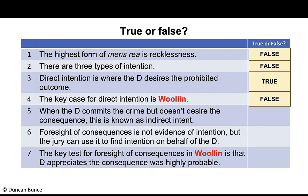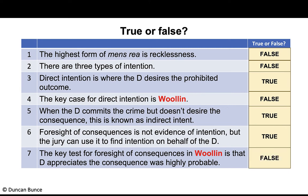When the defendant commits the crime but doesn't desire the consequence, this is known as indirect or oblique intent — true. Foresight of consequences is not evidence of intention, but the jury can use it to find intention — true. Remember: passing the Woollen test does not automatically mean there is mens rea, but the jury can choose to find it. The key test for foresight of consequences in Woollen is that the defendant appreciates the consequence was highly probable — false. It is virtually certain, not highly probable.